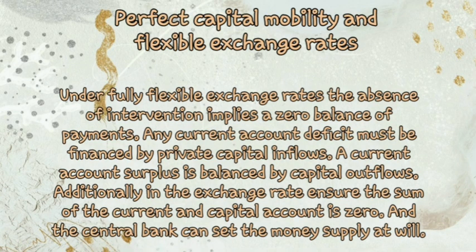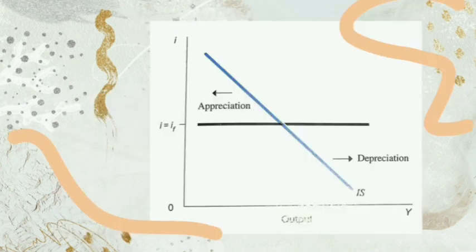Now I'm going to explain perfect capital mobility and flexible exchange rates. Under fully flexible exchange rates, the absence of intervention implies a zero balance of payments. Any current account deficit must be financed by private capital inflows, and a current account surplus is balanced by capital outflows. The exchange rate ensures that the sum of the current and capital accounts is zero. During depreciation, the IS curve will shift to the right; on appreciation, the IS curve will shift to the left.